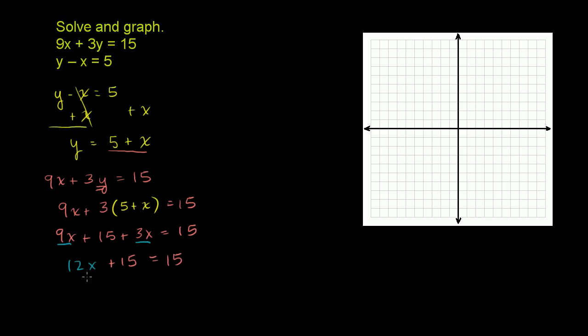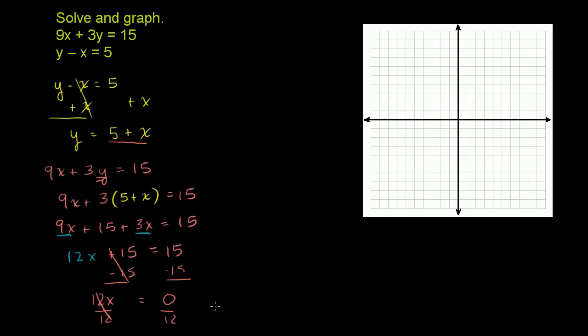Now we can subtract 15 from both sides. Just so you get only x terms on the left hand side. These guys cancel each other out. And you're left with 12x is equal to 0. Now you divide both sides by 12, and you get x is equal to 0 over 12, or x is equal to 0.